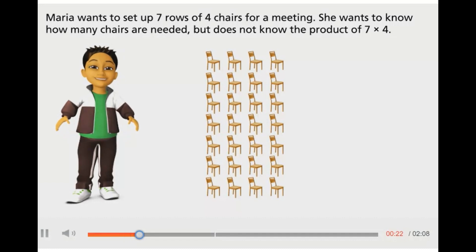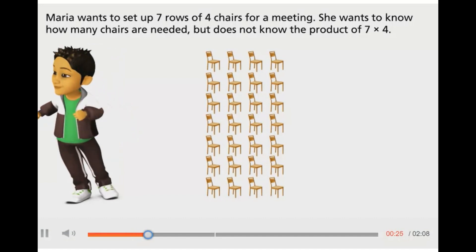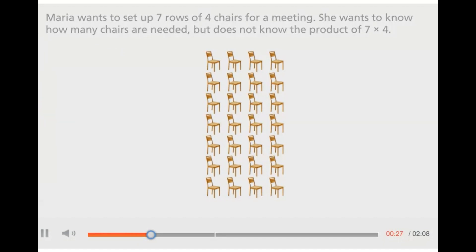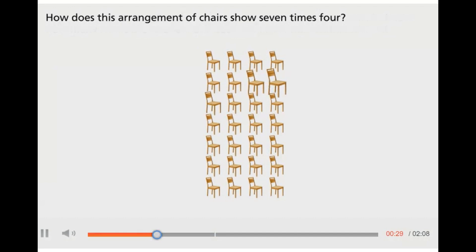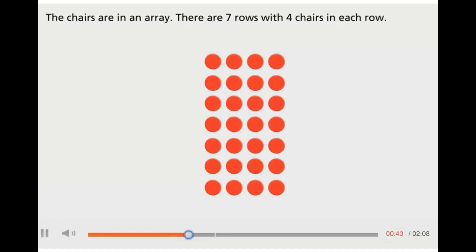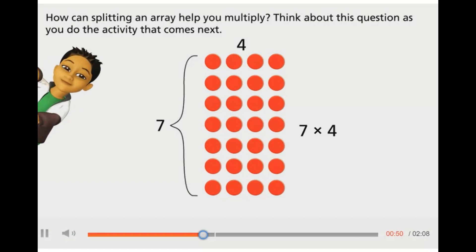You can use known facts to help find the product of unknown facts. How does this arrangement of chairs show seven times four? The chairs are in an array. There are seven rows with four chairs in each row. How can splitting an array help you multiply? Think about this question as you do the activity that comes next.